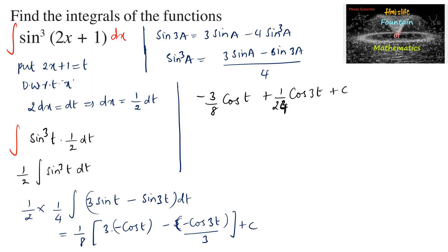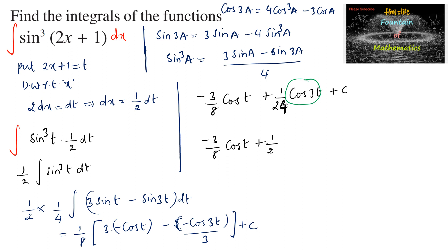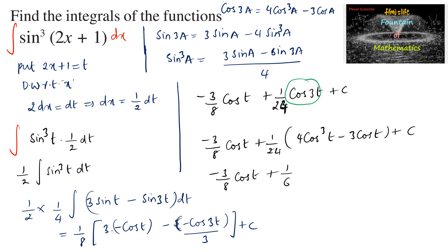We can also expand this using the cos3a formula: cos3a = 4cos³a - 3cosa. Substituting in place of cos3t, we get minus 3/8 cos t plus 1/24 times (4cos³t - 3cos t) plus c, which gives minus 3/8 cos t plus 1/6 cos³t minus 3/24 cos t plus c.